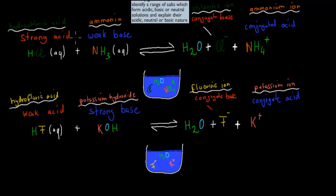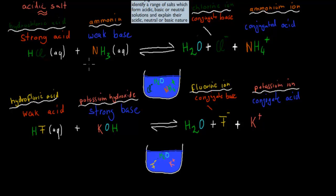The first example we're going to talk about is a salt which makes an acidic solution — an acidic salt. If you put ammonia and hydrochloric acid together — a strong acid and a weak base — the solution itself will not be neutral. It will actually be acidic, and here is the reason why.